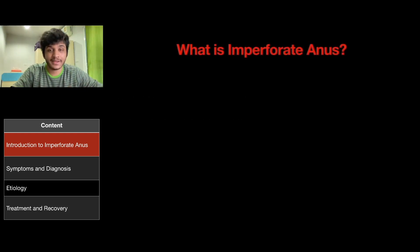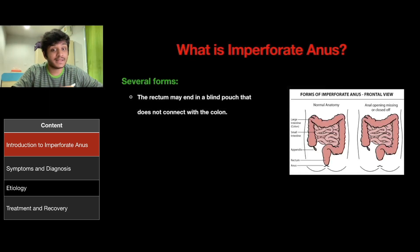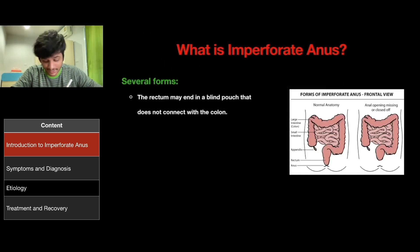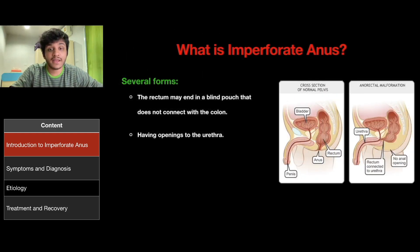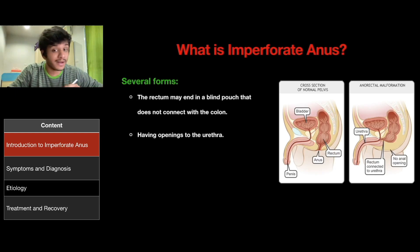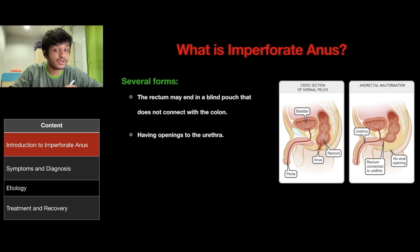Imperforate anus may occur in several forms. The rectum may end in a blind pouch that does not connect with the colon, as you can see in the diagram right here. Or it may have openings to the urethra, the bladder, the base of the penis, or scrotum in boys, or the vagina in girls.